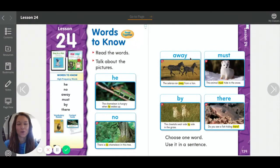Moving on over here, we have away, A-W-A-Y. Away. The zebras ran away from a lion. What is this word? And how do you spell it?